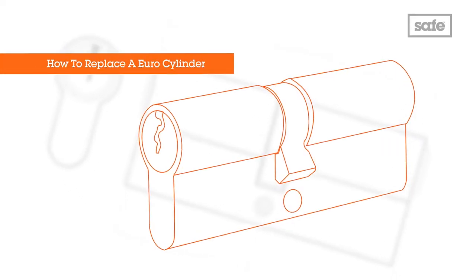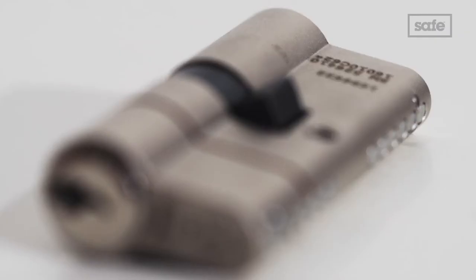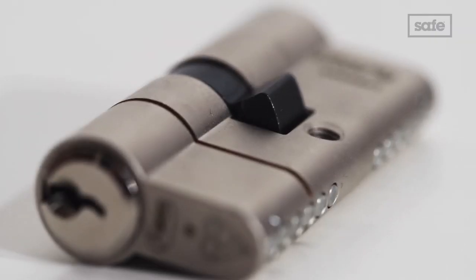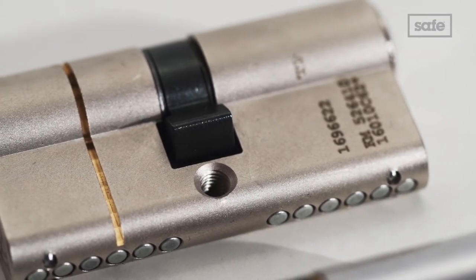How to Replace a Euro Cylinder. One of the benefits of replacing a Euro Cylinder is that it's a very simple job. You won't have to remove the handles or any part of the lock.